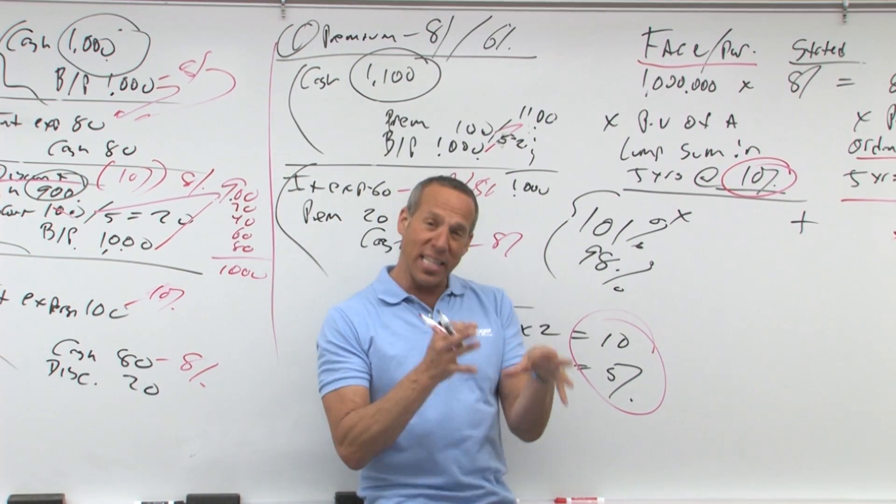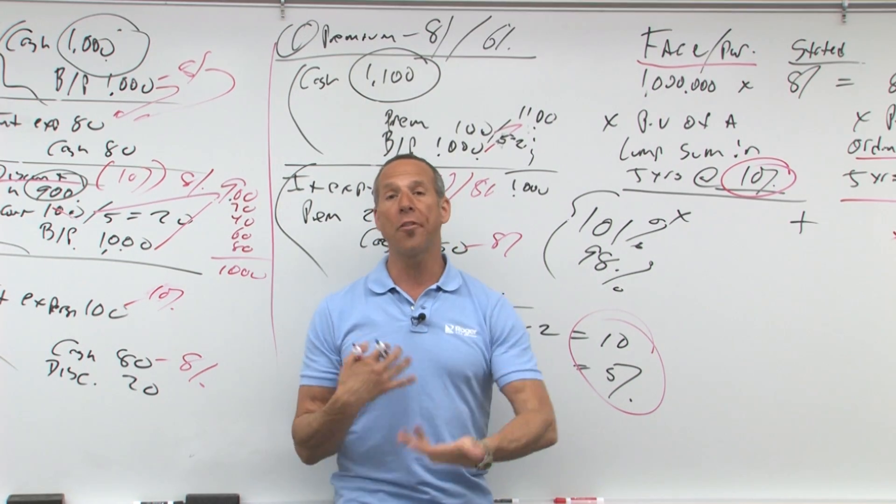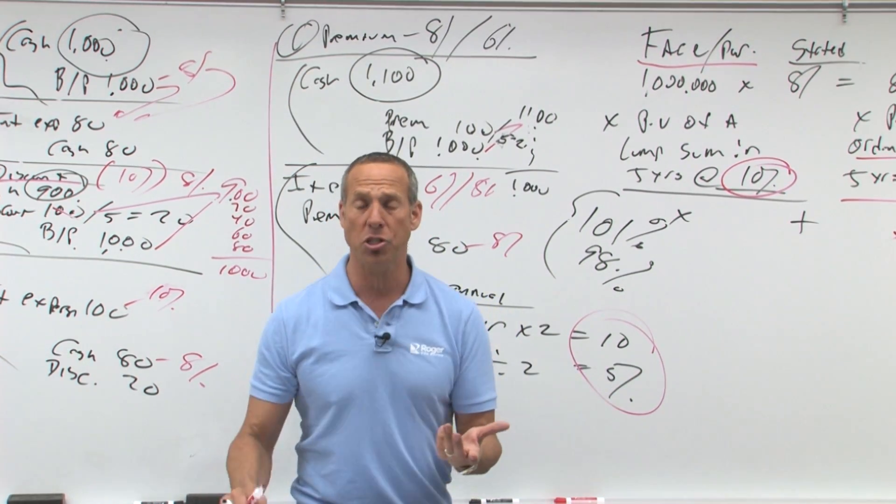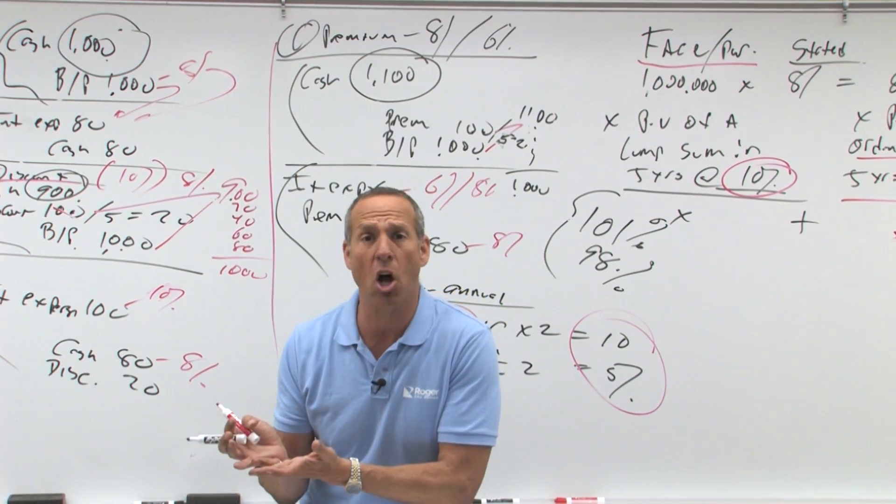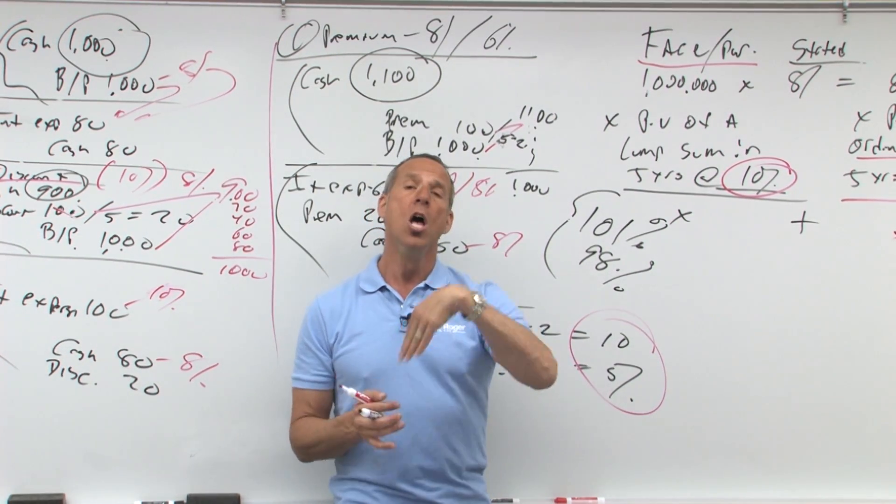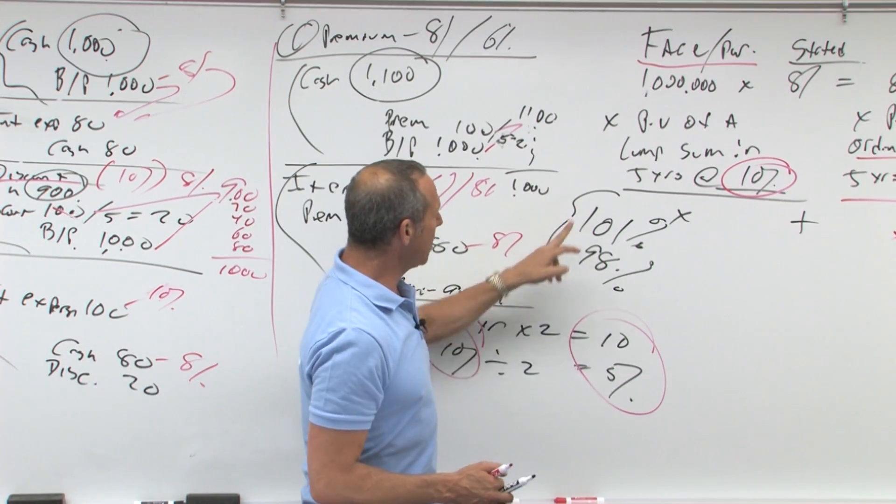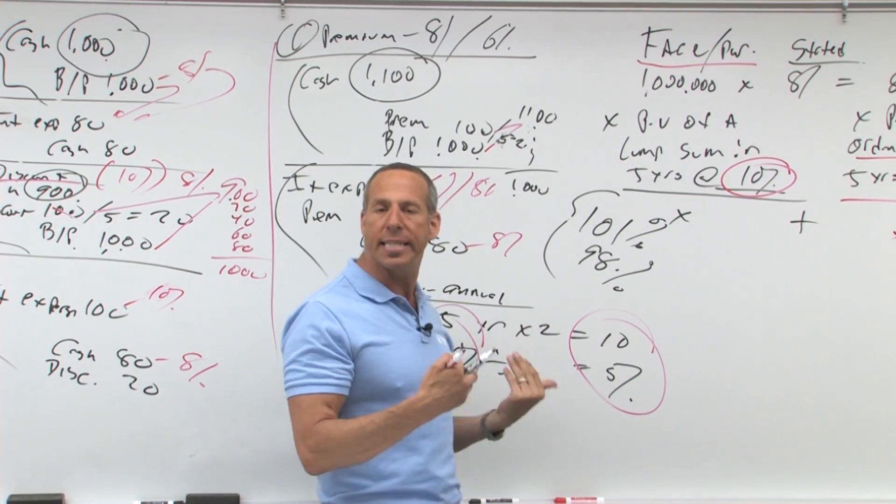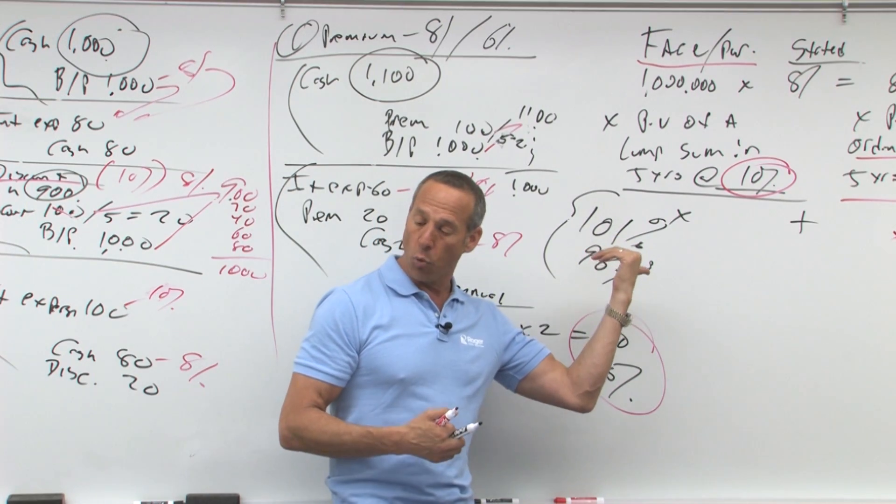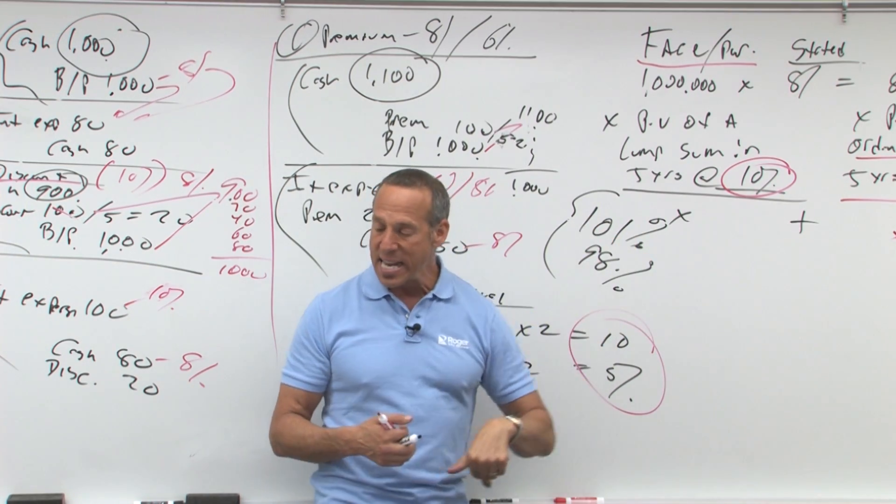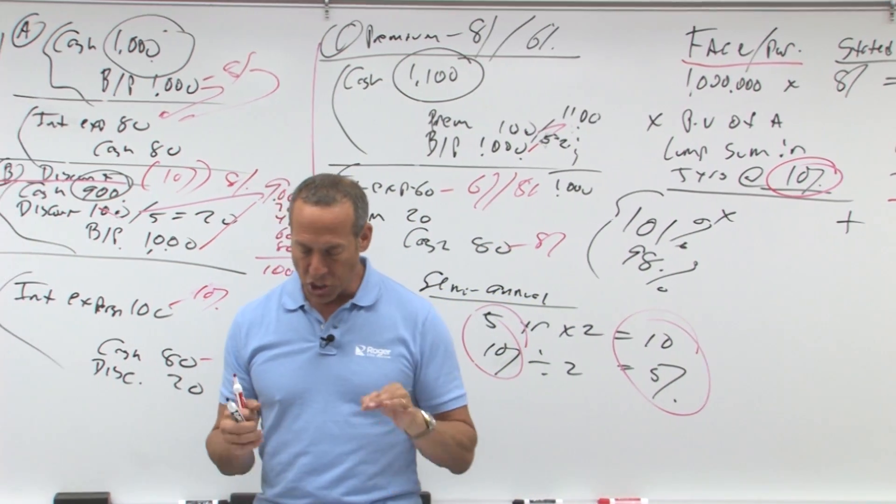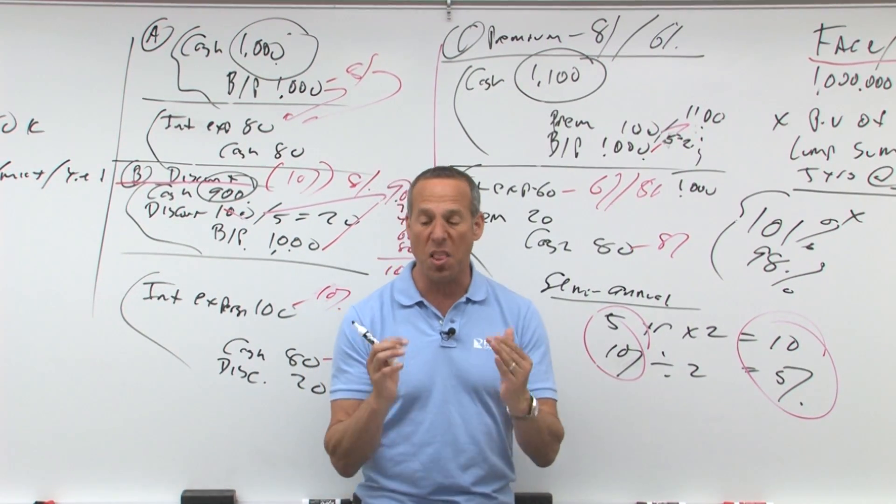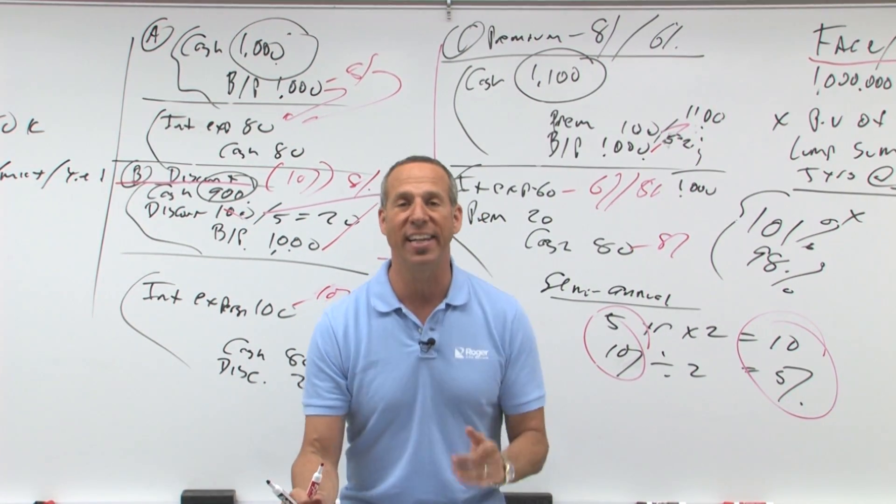It's not always the case, because sometimes there's other things included. Maybe it's a bond with detachable stock purchase warrants, which means that you have to give some value to that stock purchase warrant, which we'll cover later. So I don't want you to say always premium, always discount. Not necessarily the case, however, it tells you how much you got. I got 101% of face, or I got 98% of face. That's how much cash I got. So those are important concepts in understanding the basics of how to calculate these amounts.